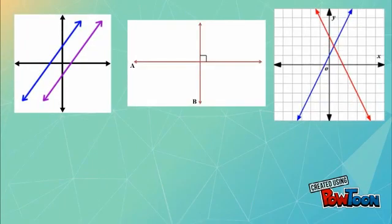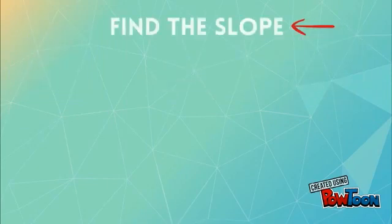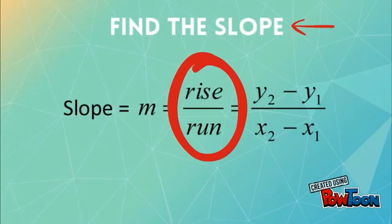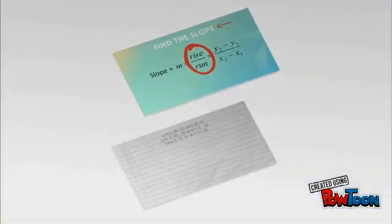In order to determine if lines are parallel, perpendicular, or neither, we need to find the slope of the lines. So to do this, we find the rise over the run, which is known as m equals y2 minus y1 over x2 minus x1.